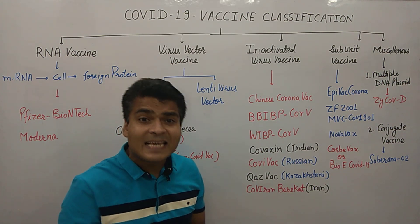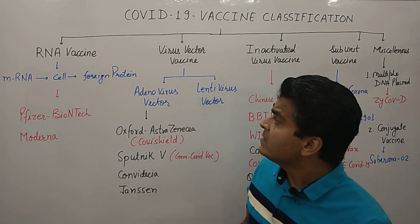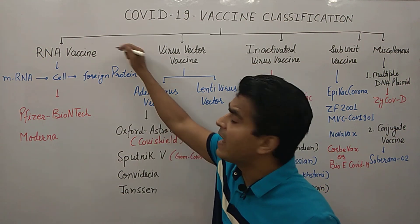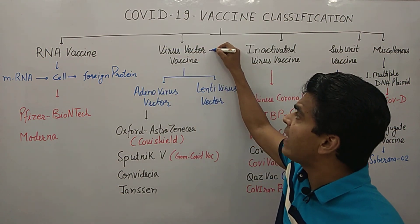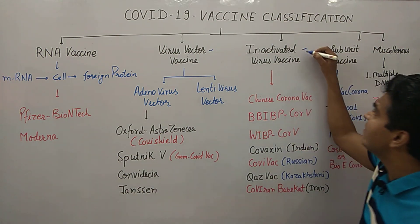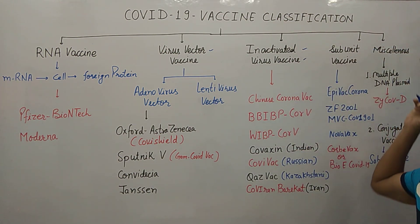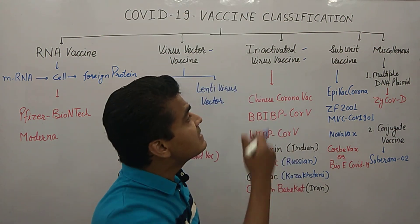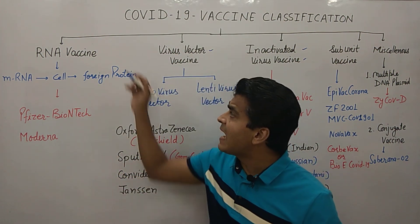COVID-19 vaccines can be classified into various types. The first type is RNA vaccine, the second is virus vector vaccine, the third is inactivated virus vaccine, the fourth is subunit vaccine, and the fifth is miscellaneous.